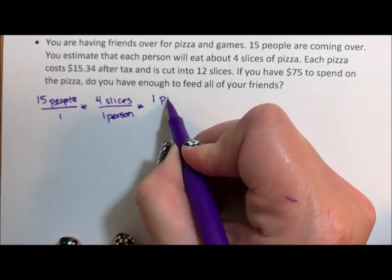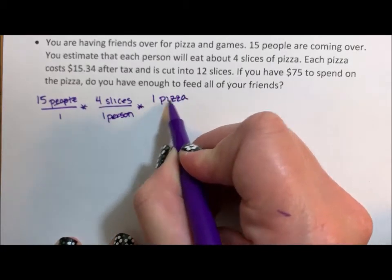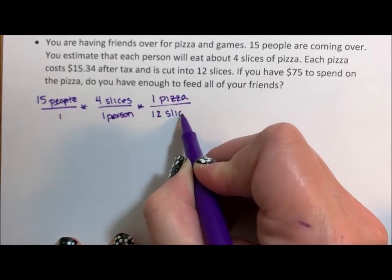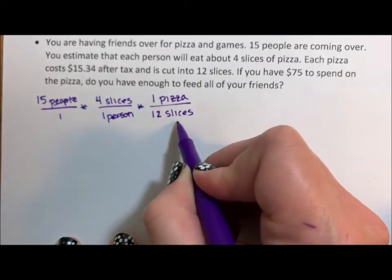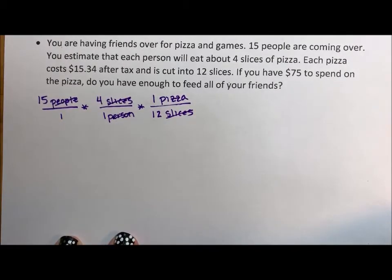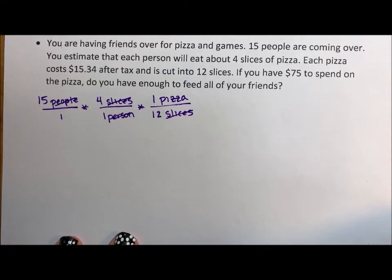One pizza is 12 slices. This fraction is equivalent to one, and we cancel out our labels. Now we have slices canceling. If we stopped here, we would know how many pizzas we needed — 15 times four divided by 12 — we would find out we needed five pizzas. But that's not what's being asked.